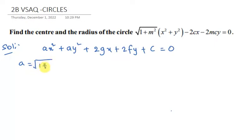We identify: a equals 1 plus m squared, 2g which is the x coefficient equals minus 2c, and 2f which is the y coefficient equals minus 2mc.